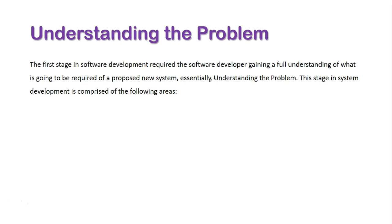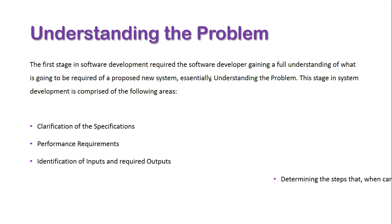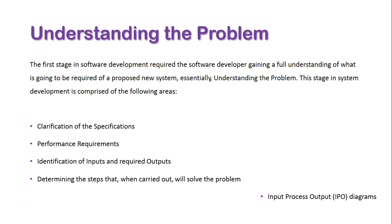To start, we need to know what's involved in this stage. Essentially, we need to understand the actual issue and why we're creating a new system. It involves clarifying the specifications, performance requirements, identification of inputs and required outputs, determining the steps that will solve the problem, and the use of Input Process Output (IPO) diagrams.